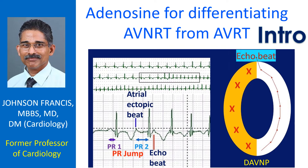Adenosine is used to terminate atrioventricular node-dependent arrhythmias like AV nodal reentrant tachycardia (AVNRT) and atrioventricular reentrant tachycardia (AVRT). It is also useful in the treatment of other forms of tachycardias. Use of adenosine in tachycardias can also serve as a tool for diagnosis of the mechanism.